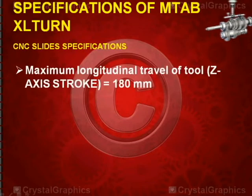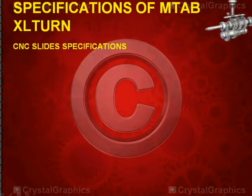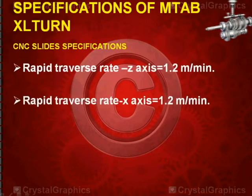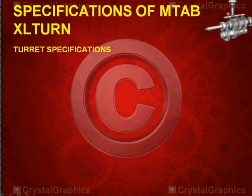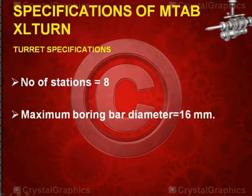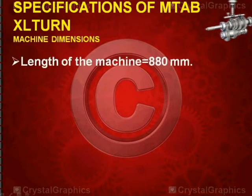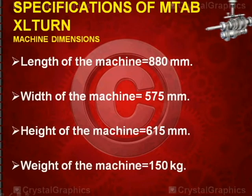CNC slide specifications: maximum longitudinal travel (Z-axis stroke) is 180mm, maximum cross travel (X-axis stroke) is 80mm, rapid traverse rate in both Z and X axes is 1.2 m/min, and tailstock base stroke is 150mm. Turret specifications: number of stations is 8, maximum boring bar diameter is 16mm, and tool cross section is 12×12mm. Machine dimensions: length 880mm, width 575mm, height 615mm, weight 150 kg.